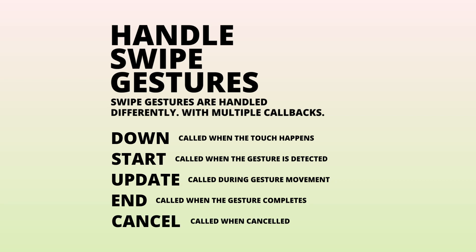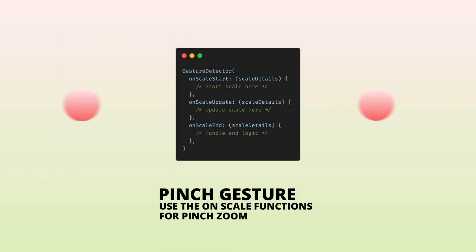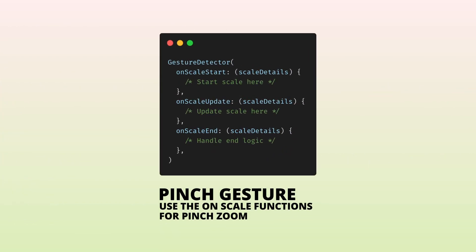End is called when the gesture completes, and cancelled is called when the gesture is not detected as a swipe anymore. Each of these can be accessed through the on swipe callbacks matching their names. There are also other common gestures like pinch to zoom.